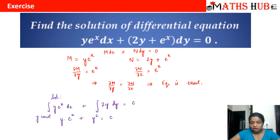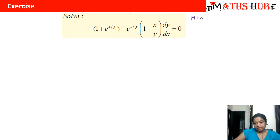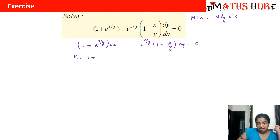Let's work out another example. In the second example: (1 + e^(x/y)) + e^(x/y)·(1 − x/y)·(dy/dx) = 0. Let us put it in the form M dx + N dy = 0 by multiplying through by dx. We get (1 + e^(x/y)) dx + e^(x/y)·(1 − x/y) dy = 0. Comparing, M = 1 + e^(x/y) and N = e^(x/y)·(1 − x/y).